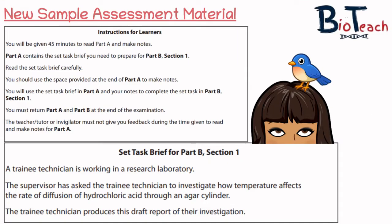The sample assessment material obviously has all the instructions. In the instructions for learners, it says you'll be given 45 minutes to read Part A and make notes. There will be some space for you to make notes, and this particular Part A will give you an idea of what you need to do for Part B as well. They will give you a set task brief. You will have a section to make notes and you're not allowed to take anything out of the room, so you will do this just before your Part B examination.